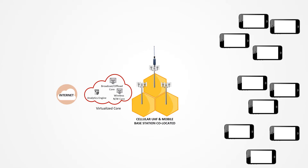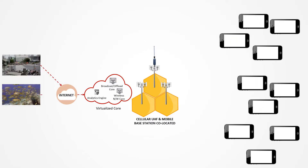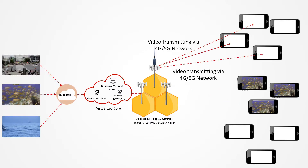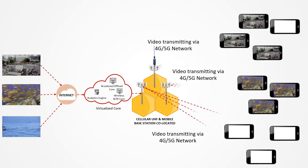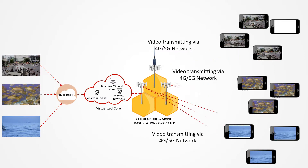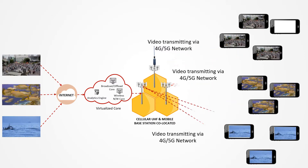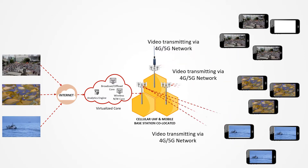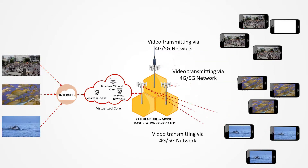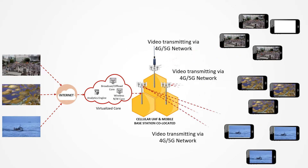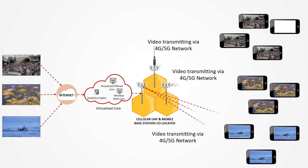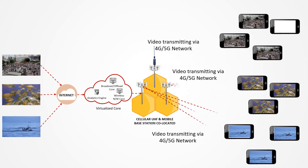There are multiple users who want to watch different content on their mobile phones. When users want to watch content on the internet, the content is transmitted by the virtualized core and base station to the mobile phones via unicast over the mobile network.